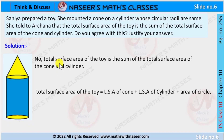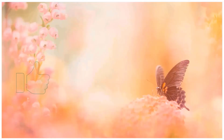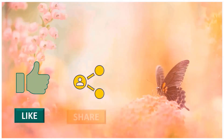I will not agree with Sanya that the total surface area of the toy is the sum of the total surface area of the cone and cylinder. Therefore, we can write: Total Surface Area = Lateral Surface Area of cone + Lateral Surface Area of cylinder + Area of the circle.